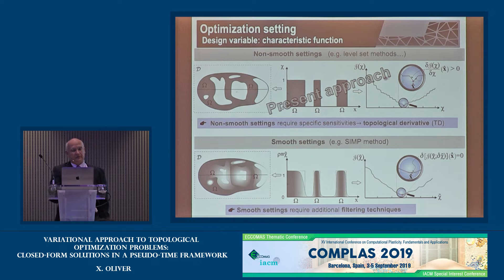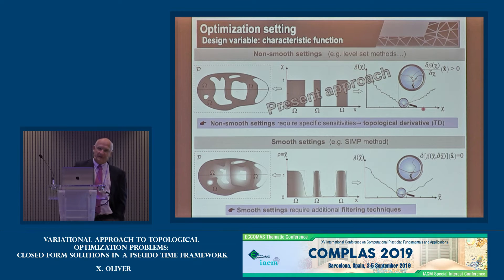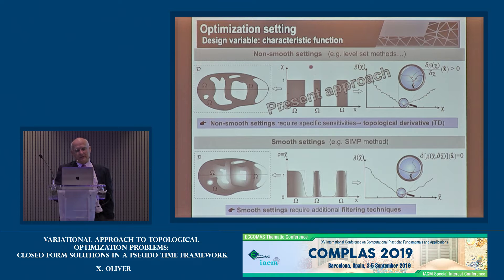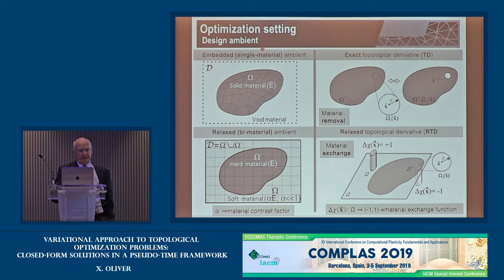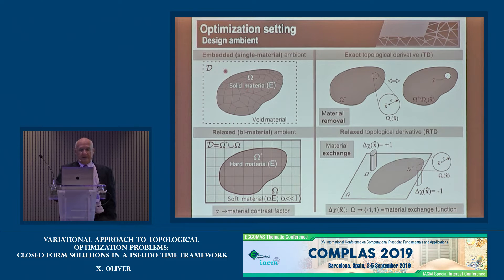Between these options, we choose to work with the non-smooth characteristic function directly, obtaining black-and-white solutions without needing filtering techniques, while accepting the mathematical challenge of non-smoothness. The second choice concerns the design ambient. In principle, we have a design domain with a solid part and a void part — one material — which we call the embedded or single-material ambient.